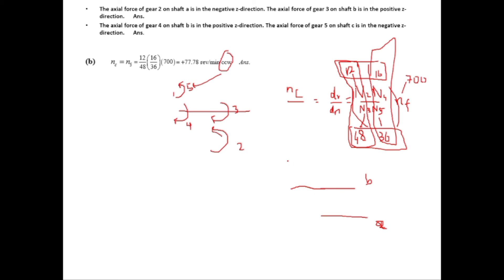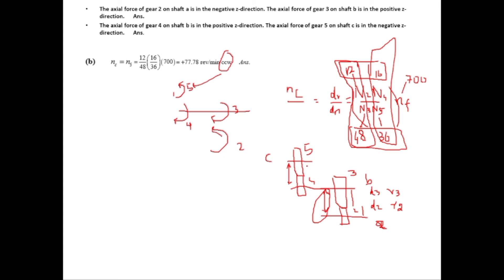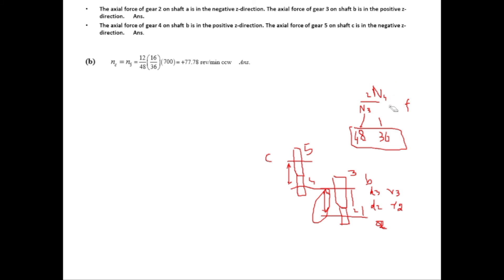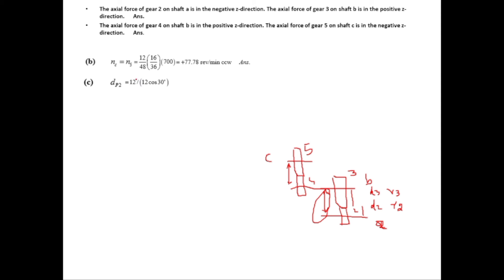For the center distances, we draw shafts A, B, and C with gear 2 on shaft A, gear 3 on shaft B, gear 4 on shaft B, and gear 5 on shaft C. The center distance between shafts A and B equals the sum of the radii of gears 2 and 3. The diameter formula is D = N divided by (P × cos ψ), where P is the normal diametral pitch and ψ is the helix angle.